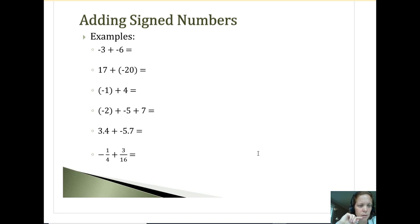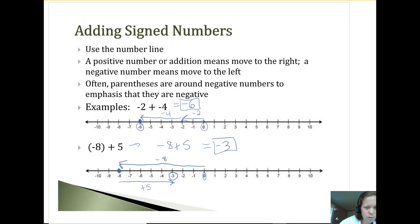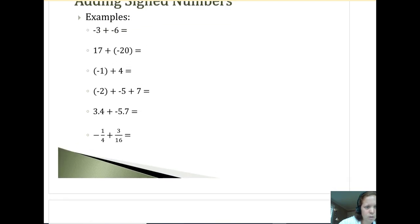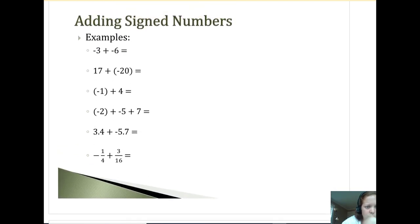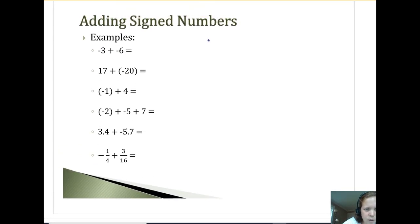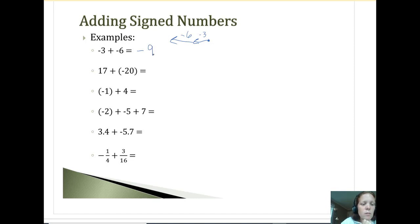So negative three plus negative six. If you're visualizing, I'm going negative three and then negative six — both going to the left. So this should be negative nine. Three and six is nine; keep it negative.